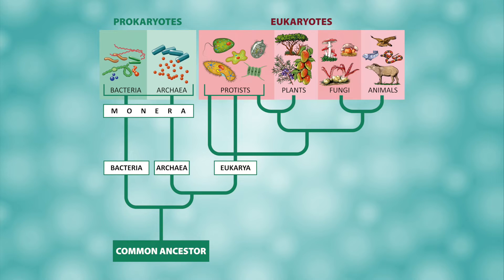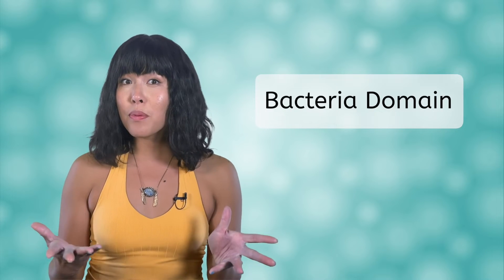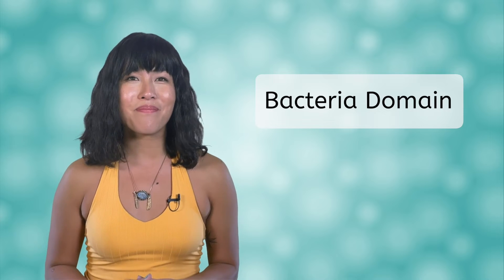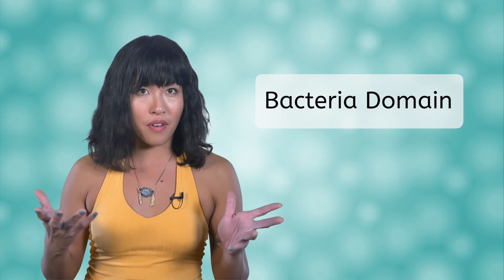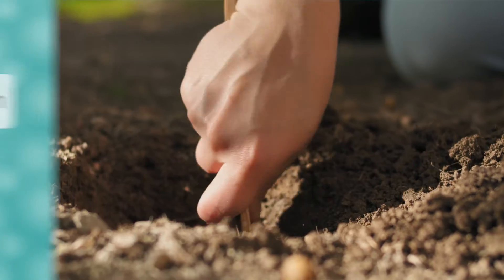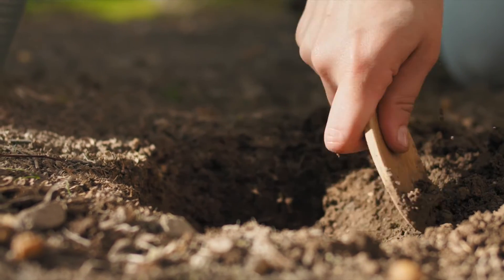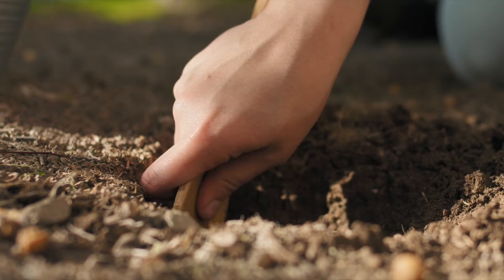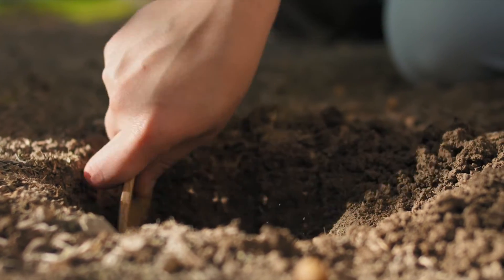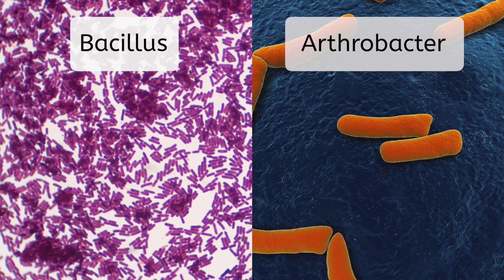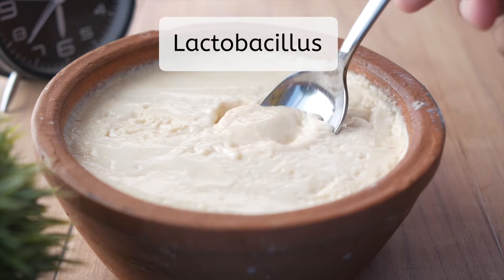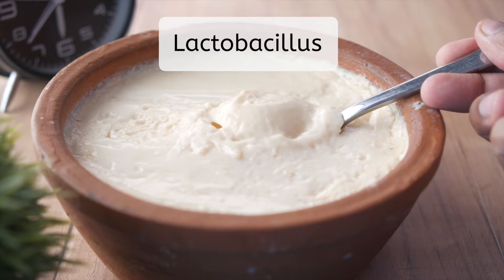Pause the video for a moment to fill out the missing information on the diagram in your notes. We'll start with the bacteria domain, as you may be familiar with some of these organisms already. Some common bacteria found in soil are Bacillus and Arthrobacter. Lactobacillus is a bacteria used in making yogurt.